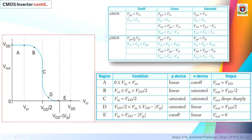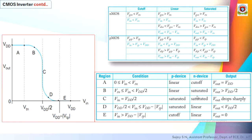For the P device, in region A it is in the linear region, then linear again in region B, saturation in C, saturation in D, and cutoff in region E. This is exactly reversed compared to the N device, which starts with cutoff, then saturation, saturation, linear, linear. So in region A, only P is on; in region E, only N is on. Both transistors are simultaneously on only in regions B, C, and D.